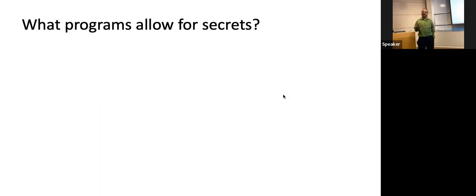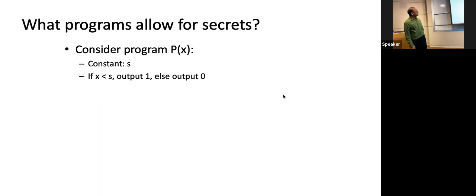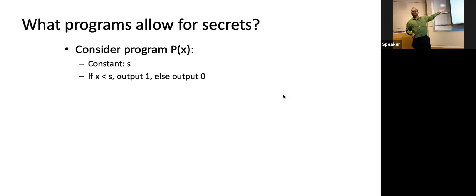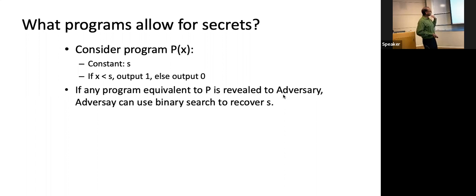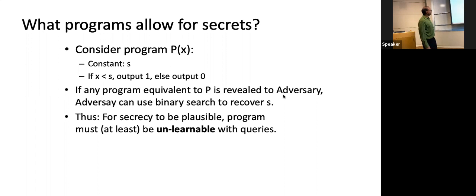We have to ask: what kind of programs even allow for secrets? Suppose I have a program with a constant S built into it, and it's just a simple comparison operator — it takes an input and checks if it's less than S. Clearly this program can't hope to hide S, because if you have access to the program you can just do binary search and figure out what S is. One has to be very careful about what kind of programs and what kind of secrets you can hope to hide. For secrecy to be plausible, at least the secret must be unlearnable from queries to the program.